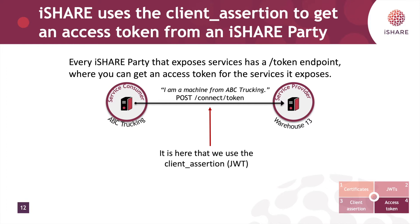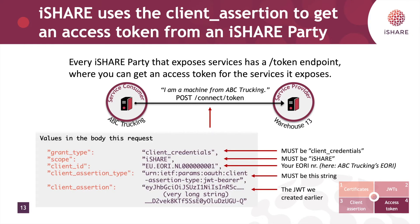So how will we send the client assertion? That's where we use the token endpoint — this is where we get the access token. Every iShare party that exposes services has a token endpoint where you can get an access token for the service it provides. You will need to use the client assertion as one of the values in the token request so that the receiver knows who is doing the token request. The body of a token request has five values: grant type, scope, client id, client assertion type, and client assertion, where we enter the value of the JSON web token we created earlier.